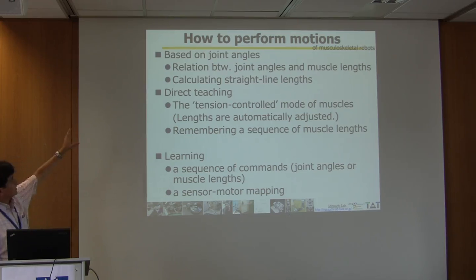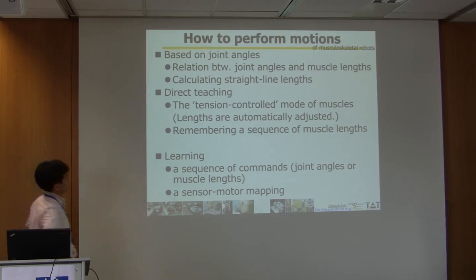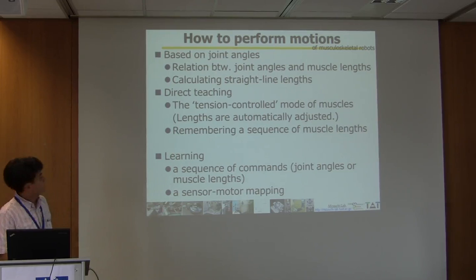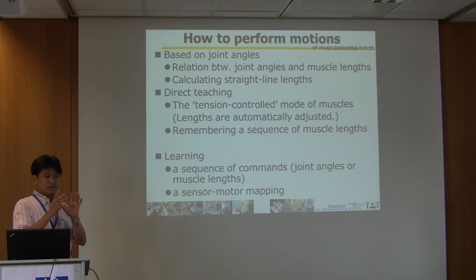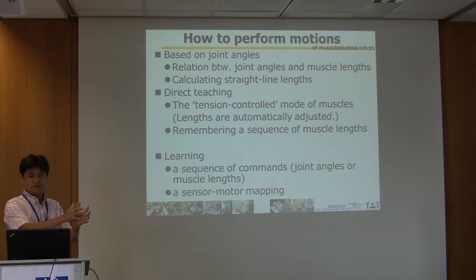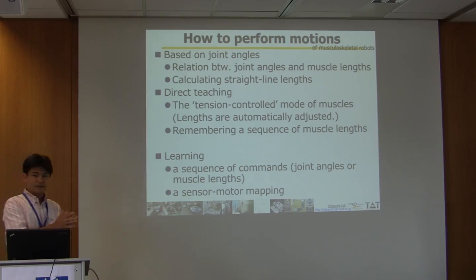Another type of generating motions is direct teaching. All the muscles have tension sensors, so we can put all the muscles in tension control mode. If we move the robot directly, the lengths of muscles are automatically changed based on the human's movement. We can record the lengths of the muscles and then repeat the recorded muscle lengths. Then the robot can regenerate the same motion as taught.